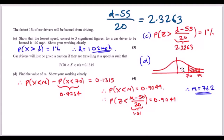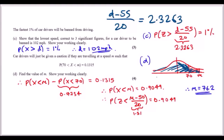Part d: drivers receive a caution if travelling at speed m where P(70 < X < m) = 0.1315. Graphically, this is a small interval above the mean of 55. Express the area as P(X < m) - P(X < 70) = 0.1315, then rearrange to find P(X < m).